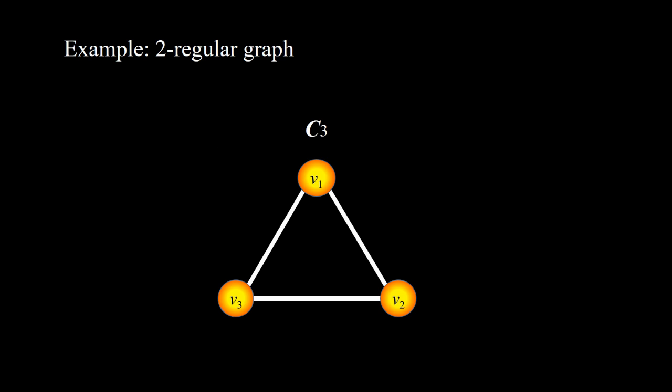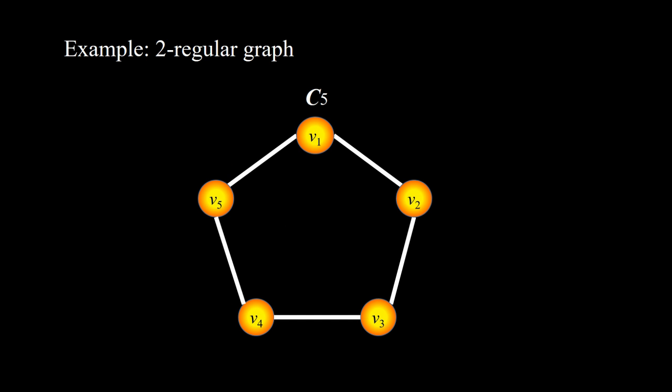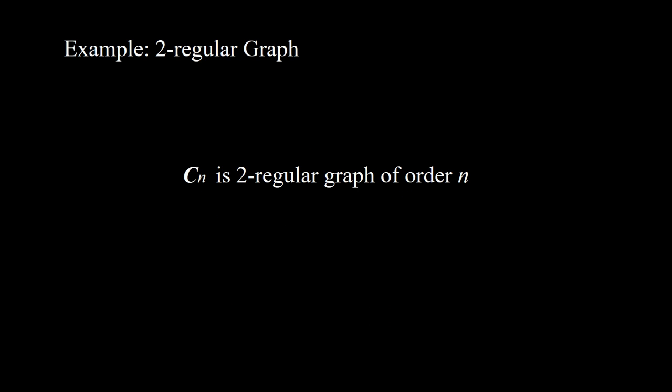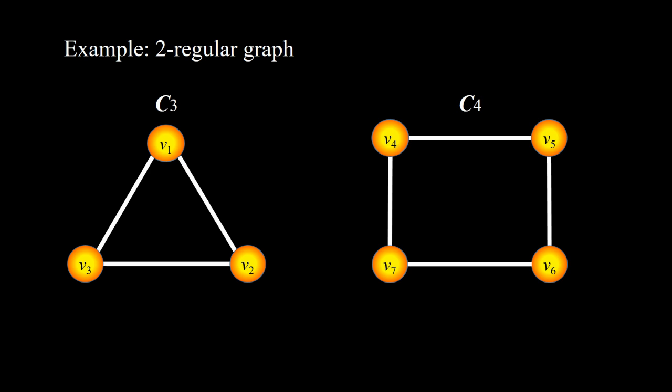C3 is an example of a two-regular graph of order 3, where v1, v2, and v3 each have degree 2. C4 and C5 are also two-regular graphs, so the cycle graph Cn is a two-regular graph of order n. The union of cycle graphs is also a two-regular graph — for example, the union of C3 and C3, and also C3 and C4.